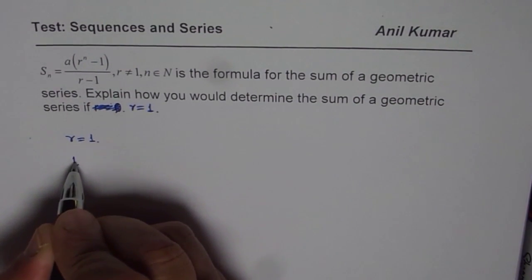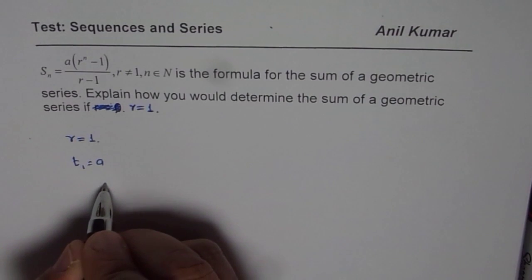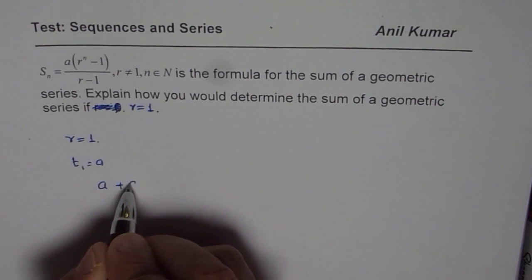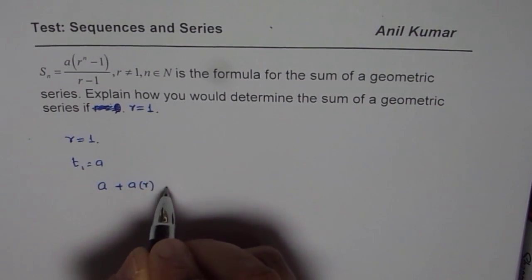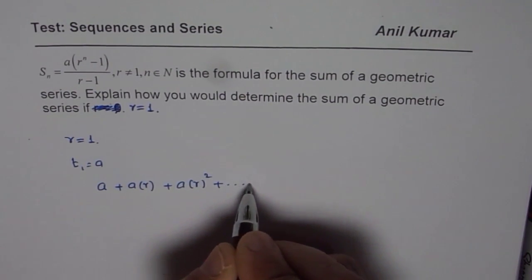First, let's say the first term t₁ is a. If r is 1, then what will the series be? The series we are talking about - the sum of that series - will be a plus a times r plus a times r square and so on. That is a geometric series, right?